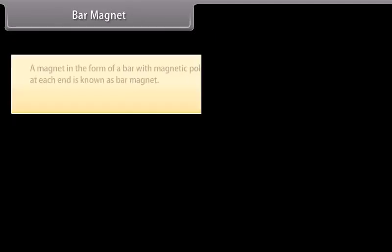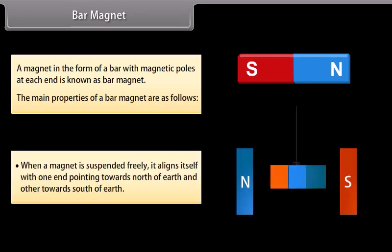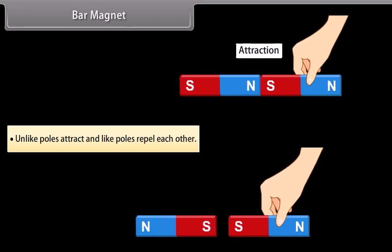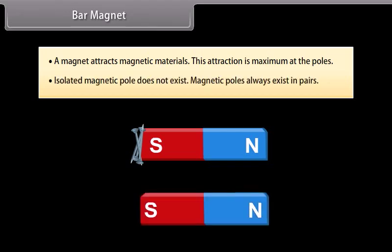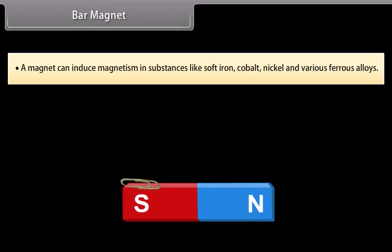A magnet in the form of a bar with magnetic poles at each end is known as a bar magnet. The main properties of a bar magnet are: when a magnet is suspended freely, it aligns itself with one end pointing towards the north of Earth and other towards south. Unlike poles attract and like poles repel each other. A magnet attracts magnetic materials, and this attraction is maximum at the poles. Isolated magnetic poles do not exist — magnetic poles always exist in pairs. A magnet can induce magnetism in substances like soft iron, cobalt, nickel, and various ferrous alloys.